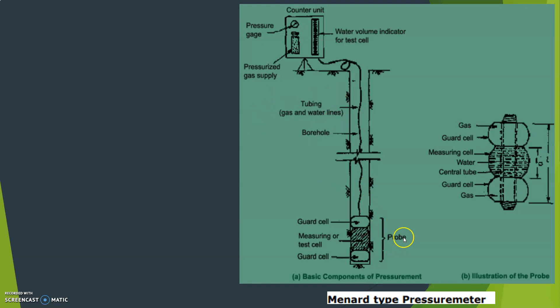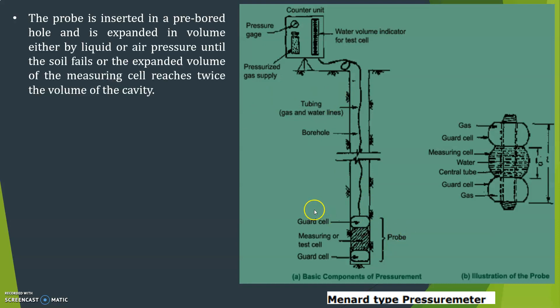You can see here this is a Menard type pressure meter. The probe is inserted in a pre-bored hole and is expanded in volume either by liquid or air pressure until the soil fails or the expanded volume of the measuring cell reaches twice the volume of the cavity.